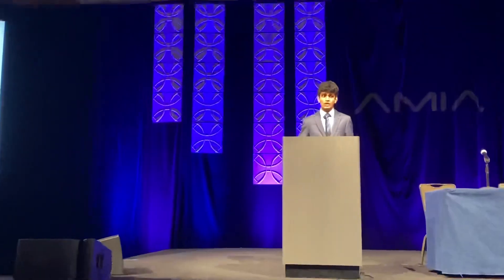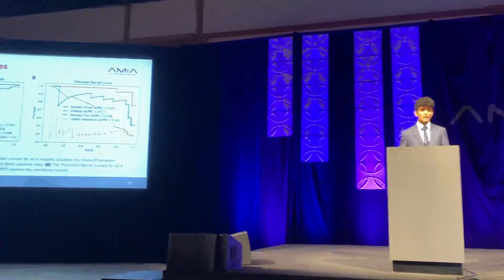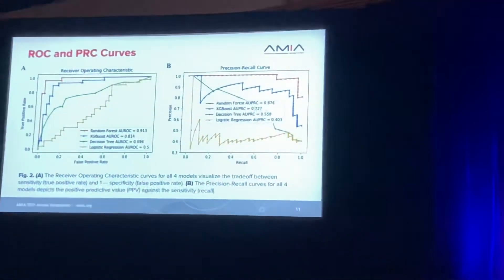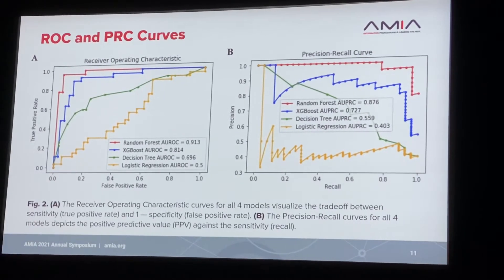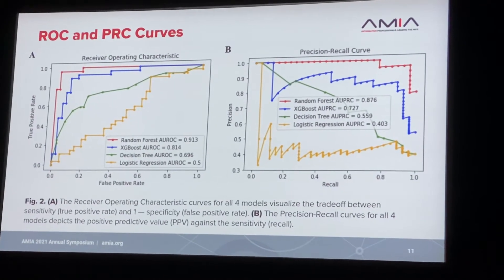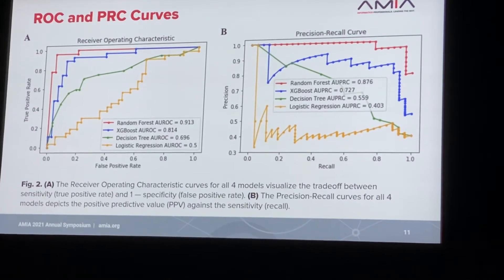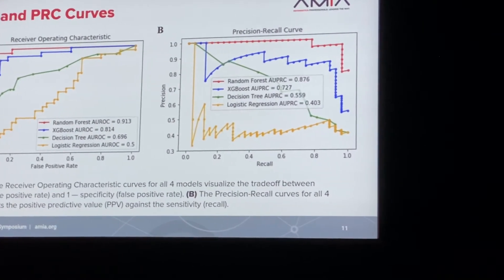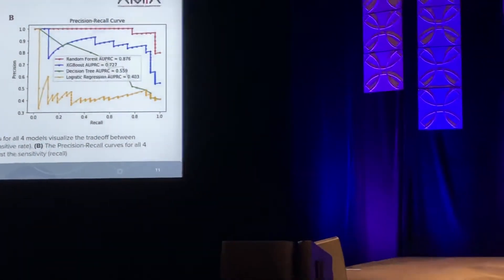Here are the receiver operating characteristic and precision-recall curves. The ROC curve on the left plots the tradeoff between the false positive rate and the true positive rate. The area under the curve for the random forest classifier is the highest in both curves, meaning it performs the best. The XGBoost classifier is second on the blue line, and the logistic regression and decision tree classifiers perform comparatively poorly.